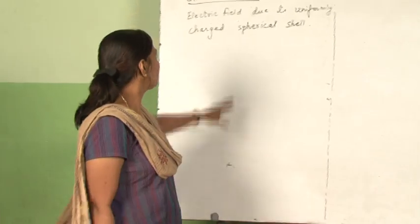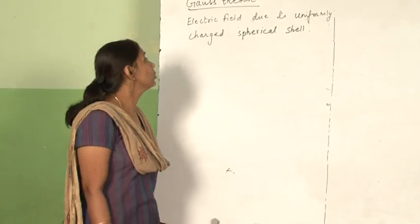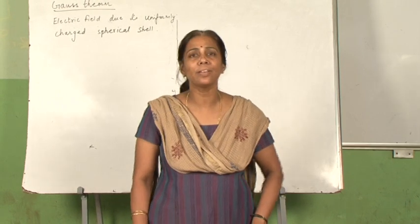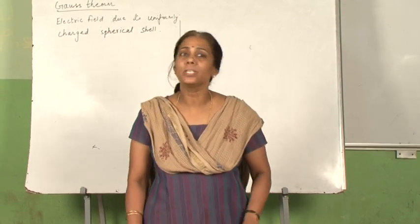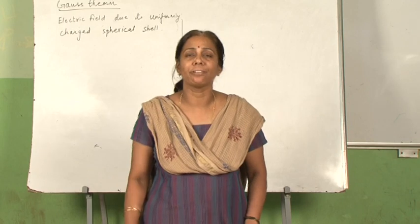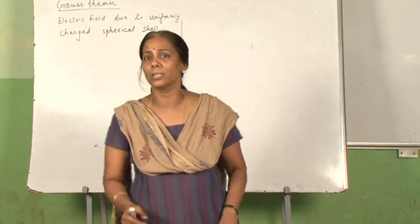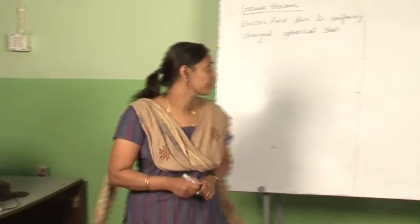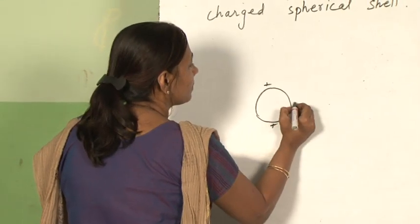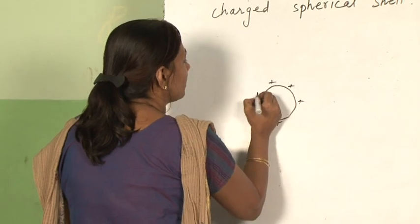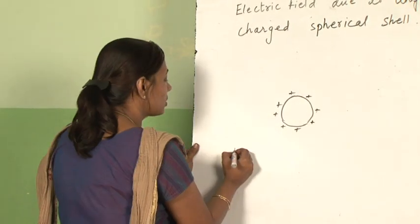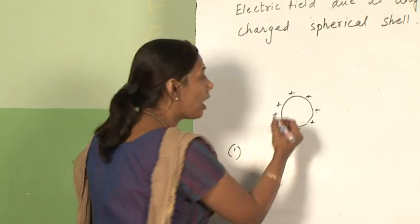Now we will do the last application of Gauss theorem — electric field due to a uniformly charged spherical shell. In the same way as the first two, we will first identify the Gaussian surface. We have to consider three points separately: when point P is outside the charged sphere, when it is inside, and when it is on the surface. Suppose this is my uniformly charged sphere; we are dividing this into 3 parts. First, we find the electric field outside the charged sphere.